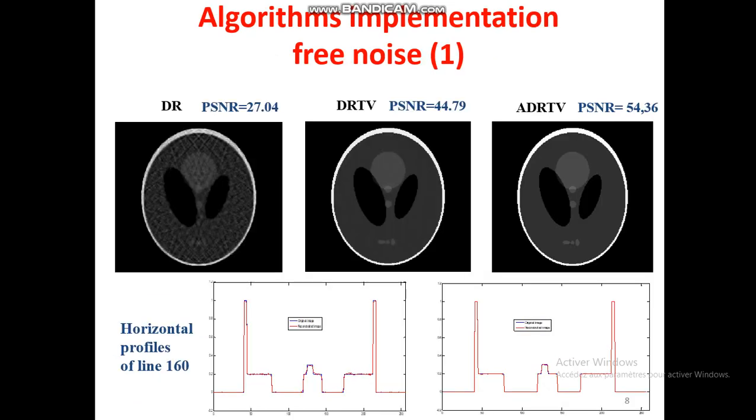The obtained results in the case of free noise image are as follows. We obtained the best PSNR, around 54 for the ADRTV, against 44 for the DRTV.